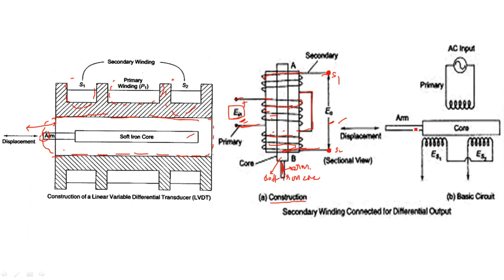The basic circuit shows more clearly how the input voltage is applied and the output voltage is taken. The soft iron core and arm are shown; AC input voltage (excitation) is applied to the primary winding. The two secondary windings are connected such that once the first winding is complete, the same wire is extended to create secondary winding two.